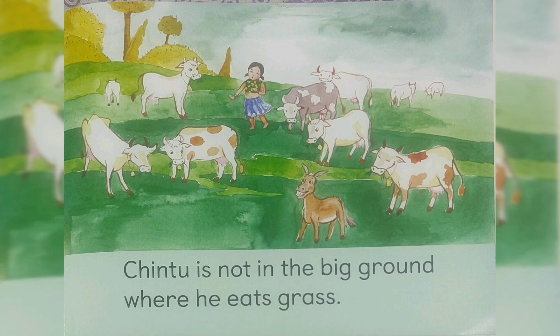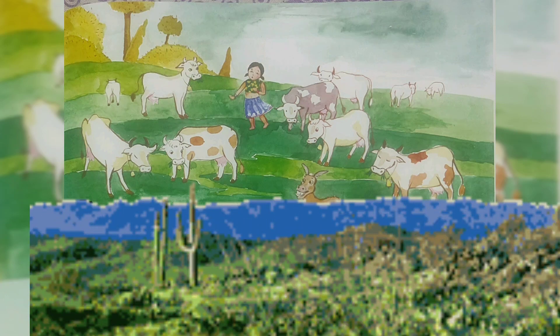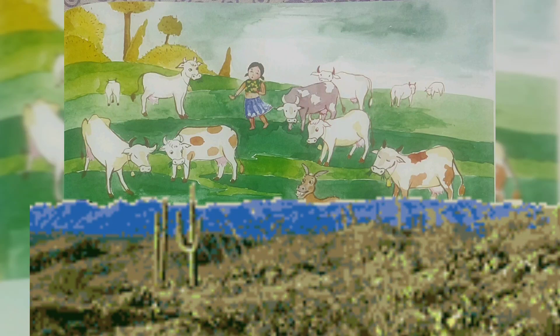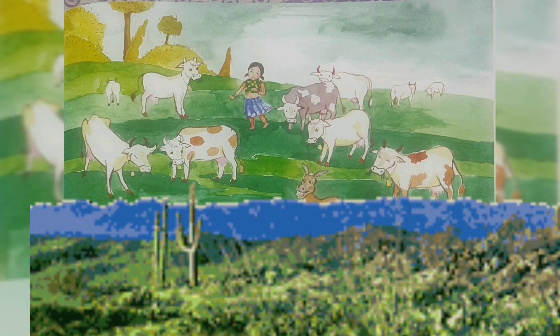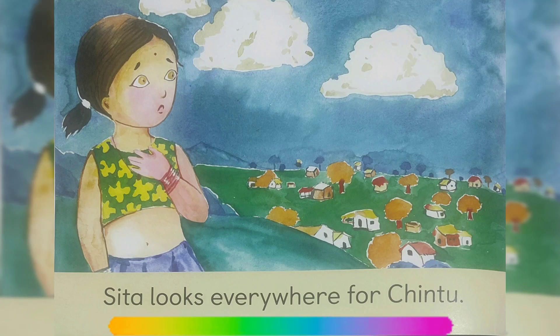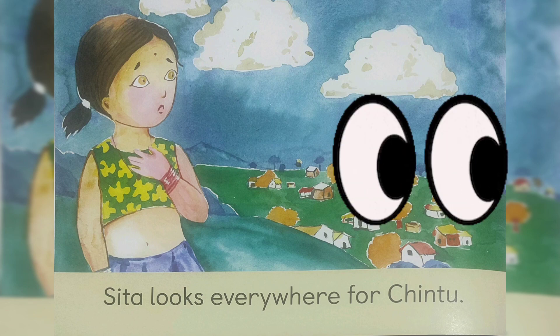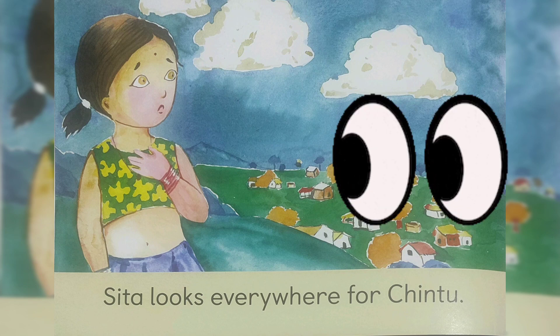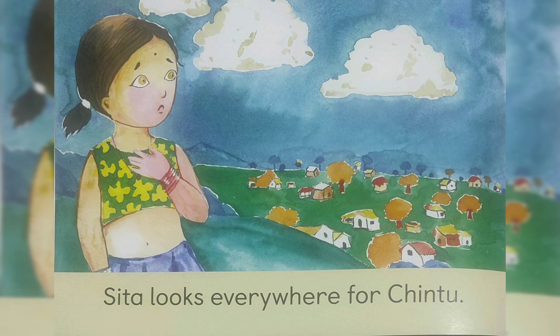Chintu is not in the big ground where he eats grass. Chintu us bade meydan mein bhi nahi hai, jahaan vahe ghaas khaata hai. Hey kids, where is Chintu? Sita looks everywhere for Chintu. Chintu ki talash har jagah kerti hai. Everywhere meaning har jagah.